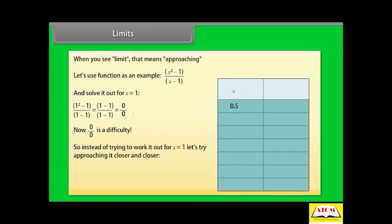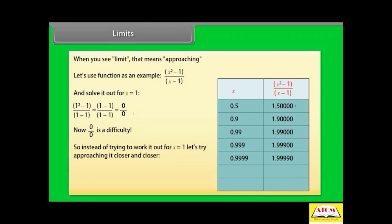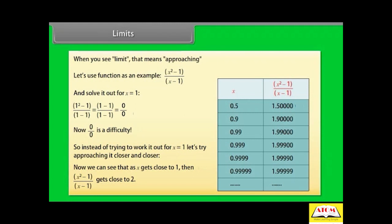For x = 0.5, the value of the function is 1.5. For x = 0.9, it is 1.9. For x = 0.99, it is 1.99. For x = 0.999, it is 1.9999. For x = 0.9999, it is 1.99999. For x = 0.999999, it is 1.999999. Now we can see that as x gets closer to 1, (x² - 1) / (x - 1) gets close to 2.